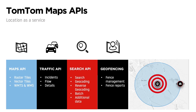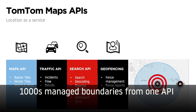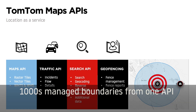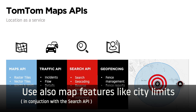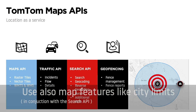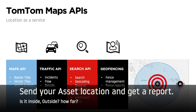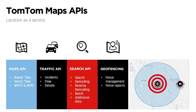Recently we have released a Geofencing API where you can create and manage thousands of virtual boundaries from one central location. You can use map features like airport grounds or city limits, or define geometric polygons and create fences. Then you can submit the location of your asset and get a report — whether it was inside, where, and how close, and so on.